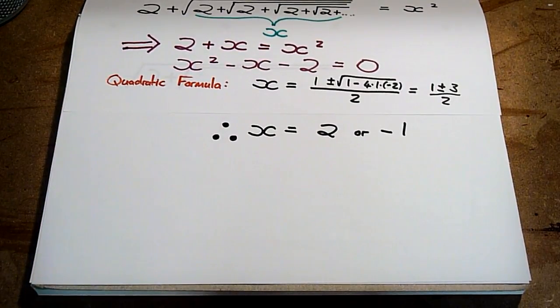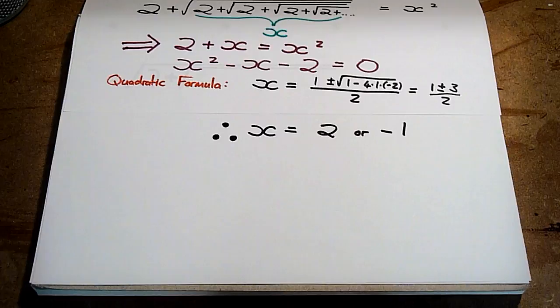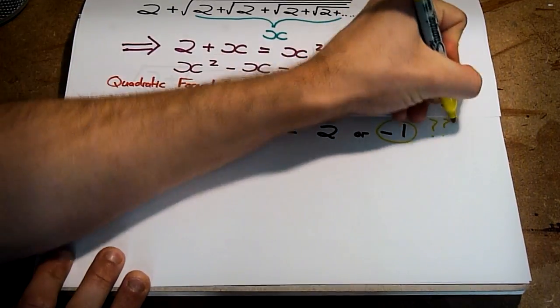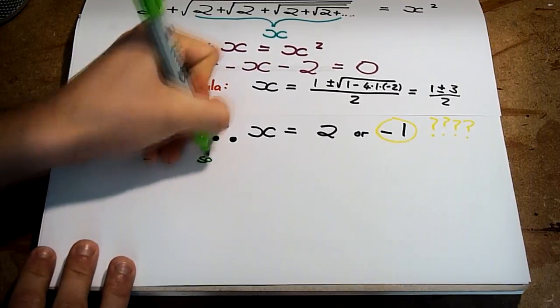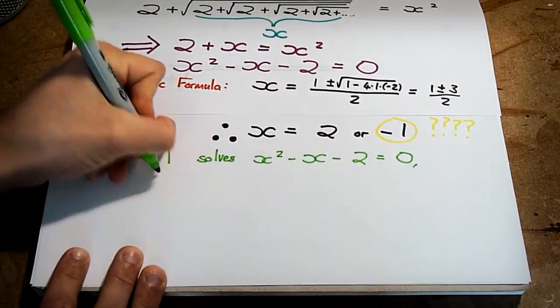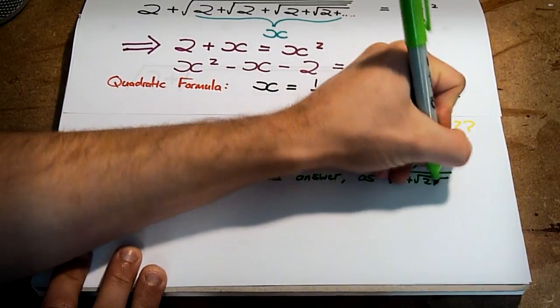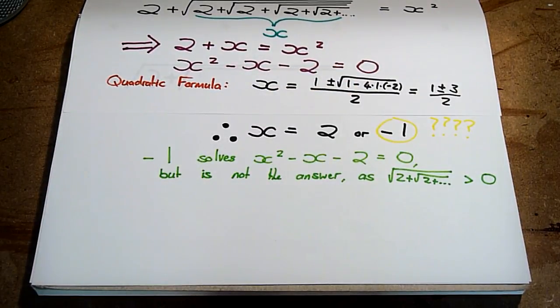Hold on. Two answers for x? Surely we defined x already. It can only have one answer. It turns out this is just an artifact from the way that we solve quadratic equations, and we can ignore this answer as being unphysical. We know the answer must be positive because we were taking the positive square roots of positive numbers.